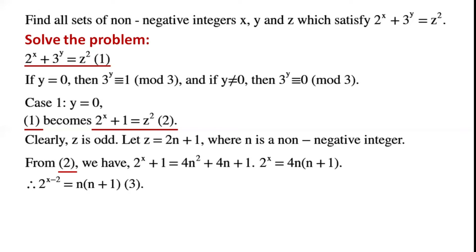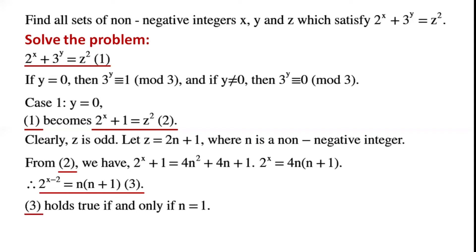So 2 to the power of x minus 2 equals n times (n plus 1). Equation 3 holds true if and only if n equals 1, so x equals 3 and z equals 2n plus 1 equals 3.